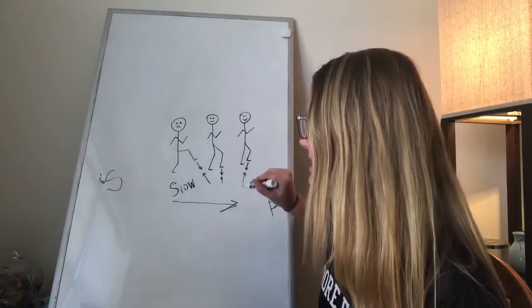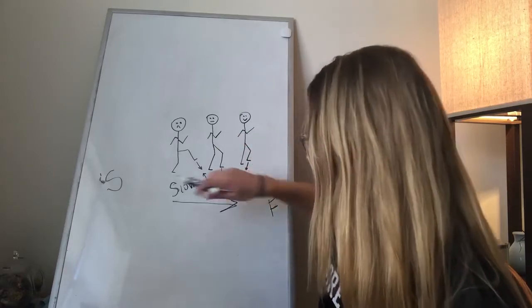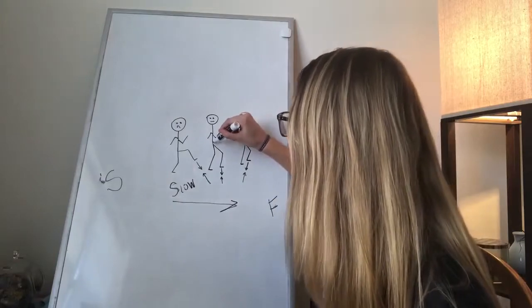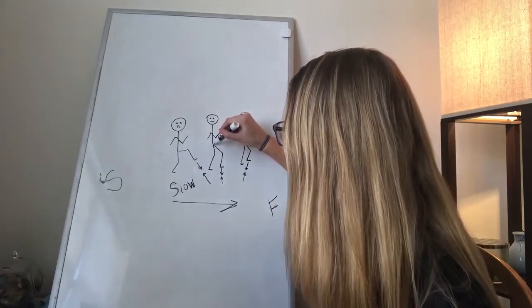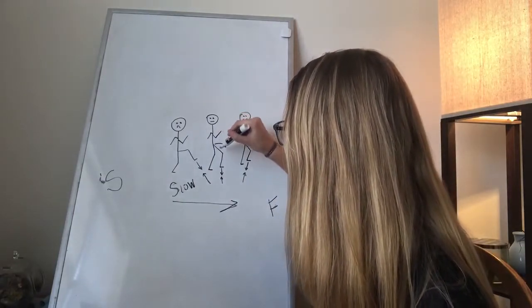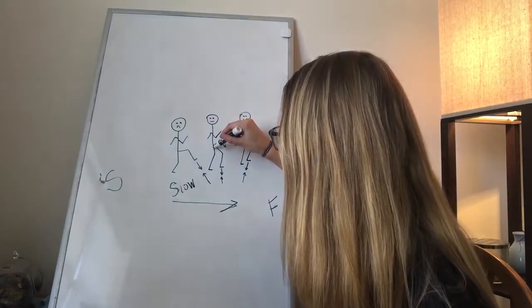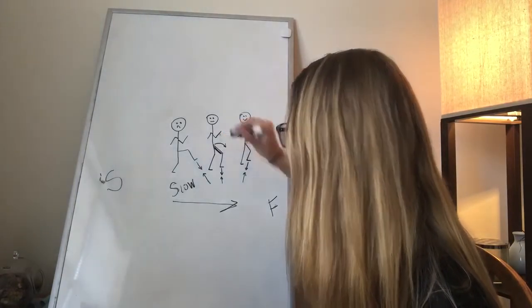...because now the angle is kind of going back up into him and not so much towards the starting line, he's still, the only way he can get these hips up here is if he pulls with these hamstrings back here.